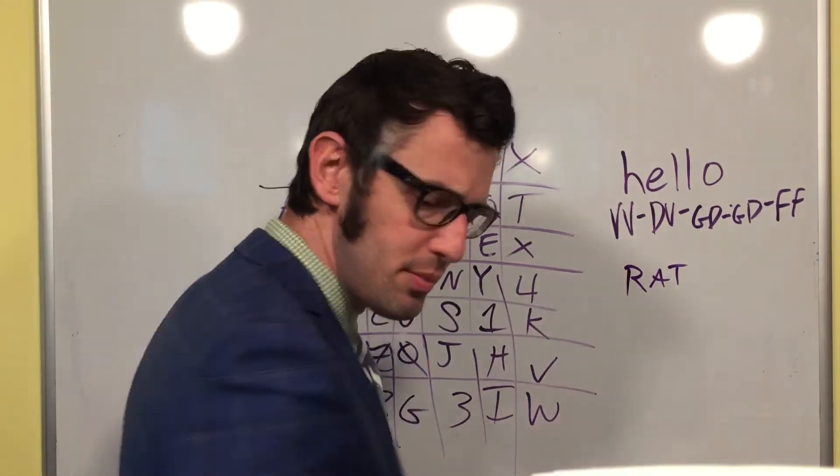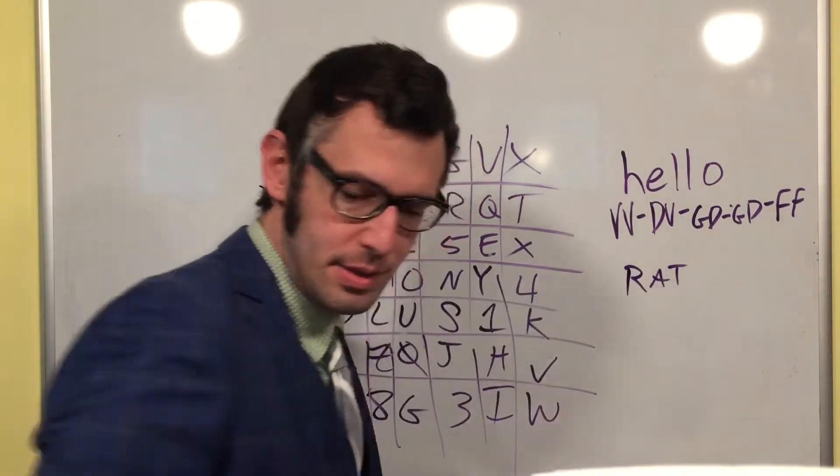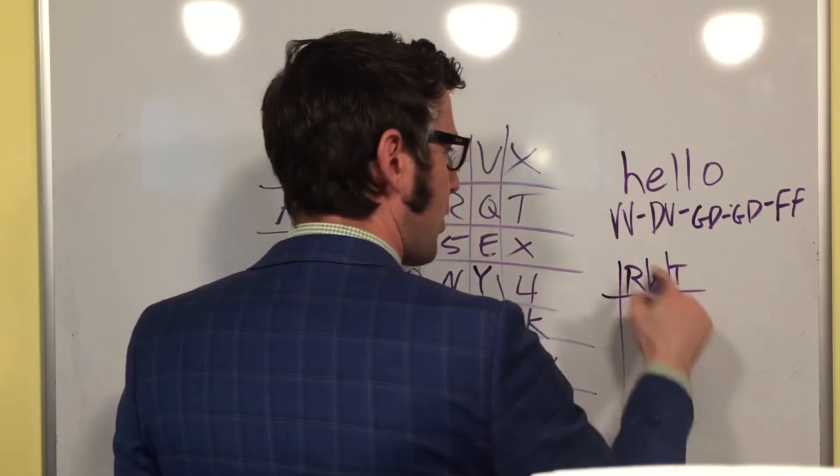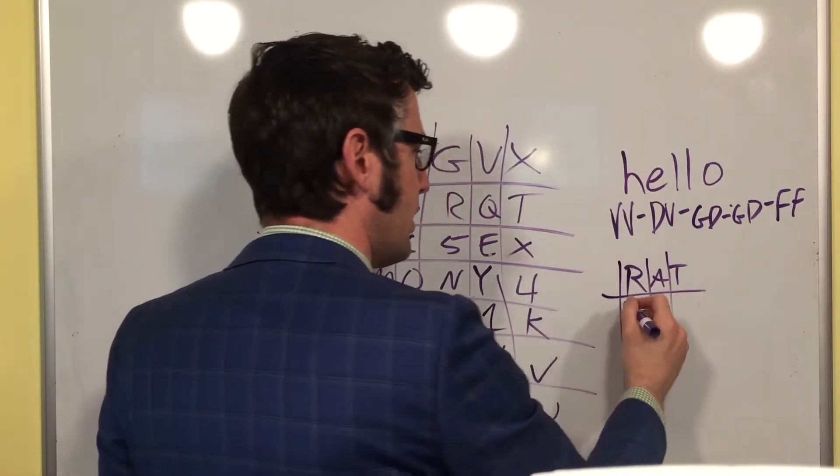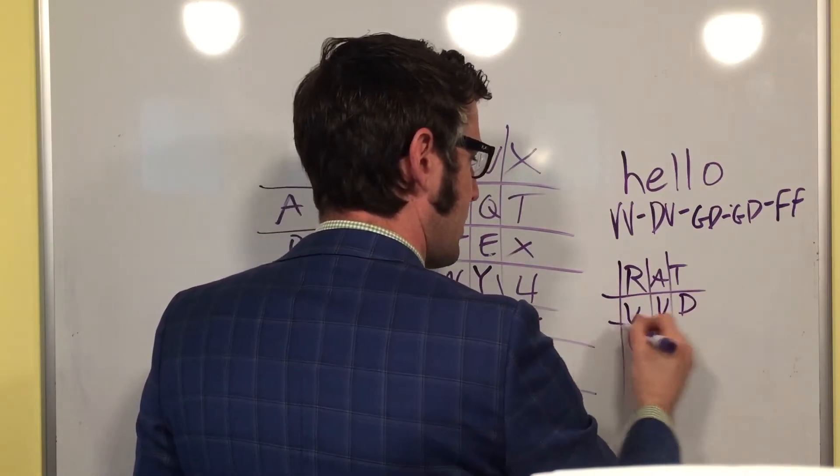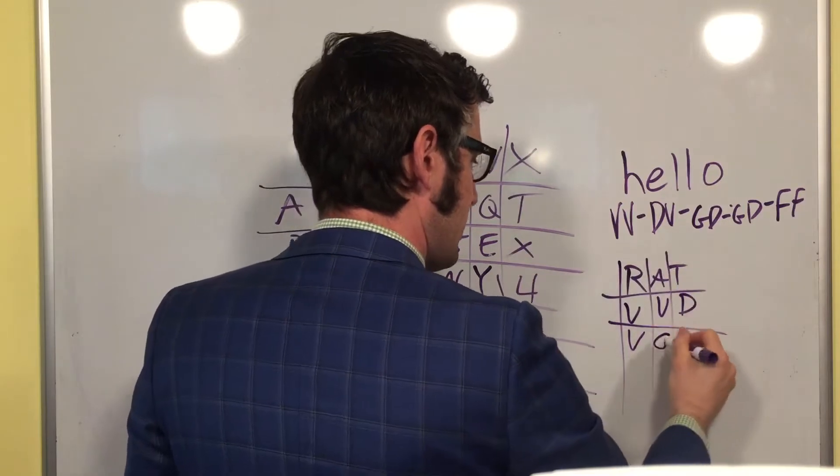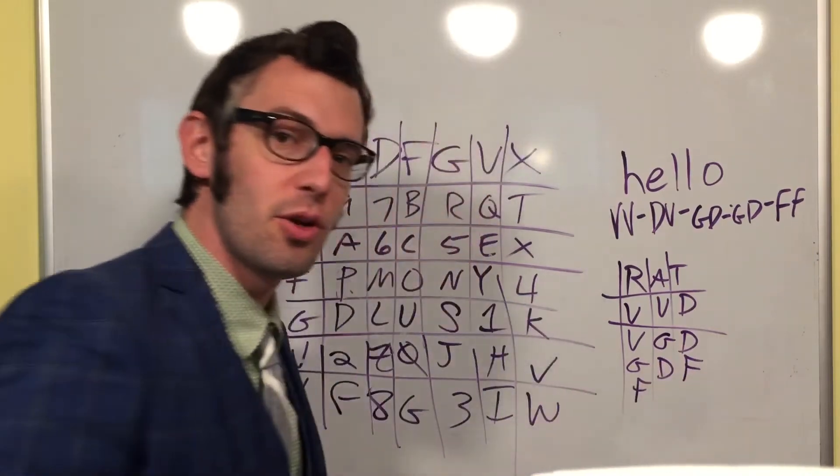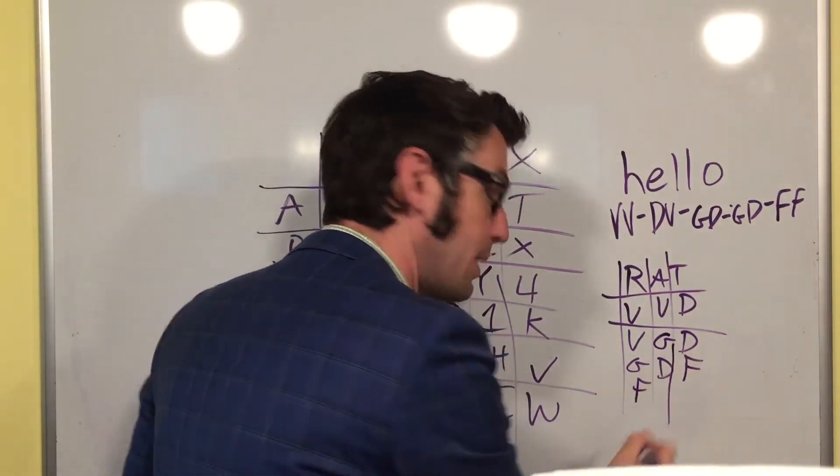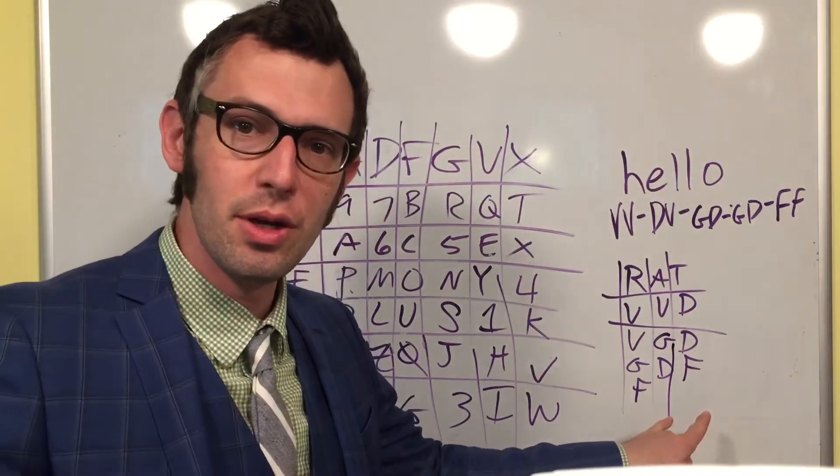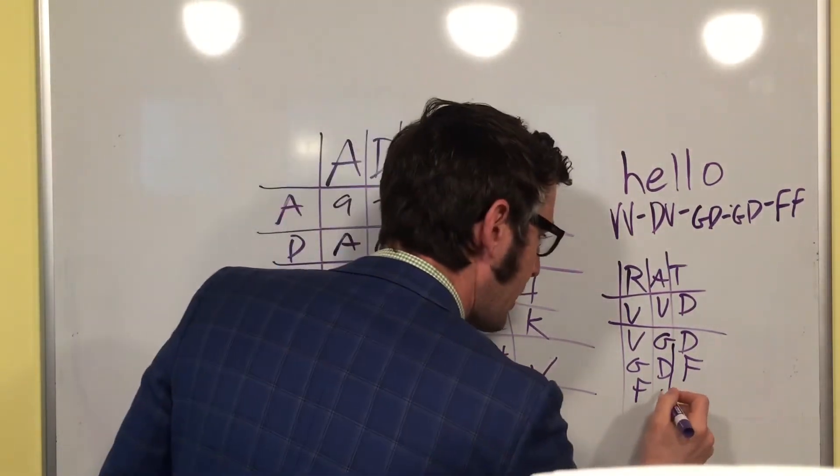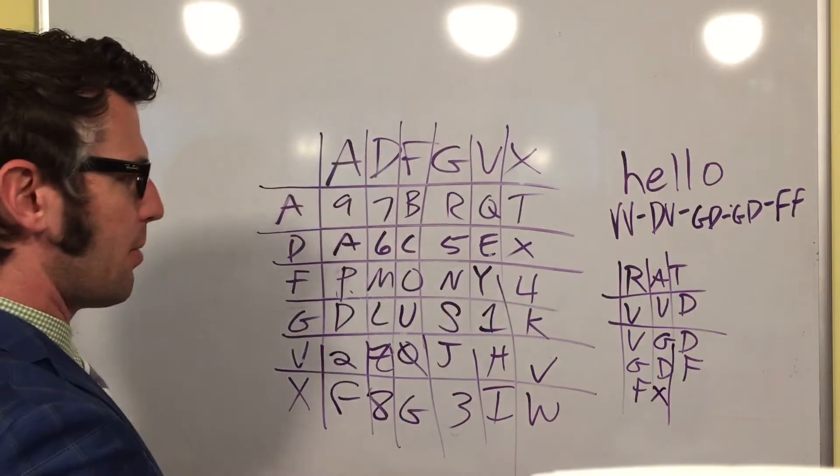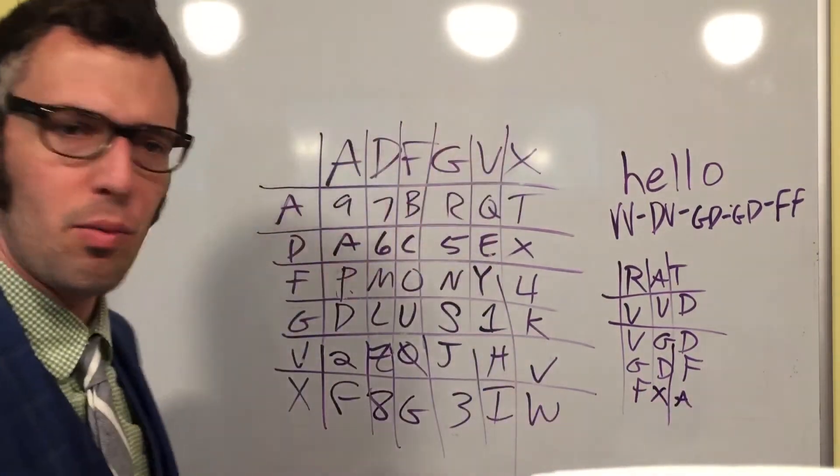So what I do then is I'm going to write the letters of this underneath of rat. So I have columns. I'm going to fill in the rows with these letters. So V, V, D, V, G, D, G, D, and then F and F. Now, the reason I chose this one is so that you can see that if you run out of letters to fill in here, you throw in some gibberish. Just throw in some nulls. So I'm going to throw in an X and an A. Just to confuse somebody.